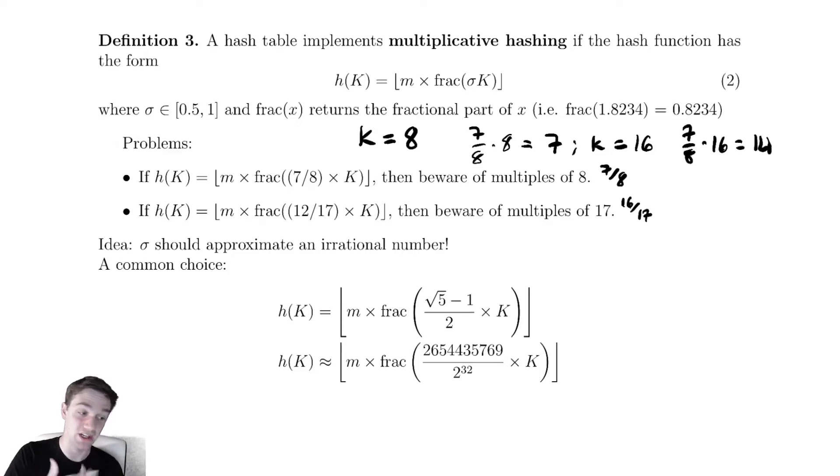So one way around this is that you can make this approximate an irrational number. Irrational numbers are numbers which cannot be expressed as an integer divided by an integer. And that should therefore avoid this particular issue. One common choice is this thing that looks vaguely similar to something you may have seen with the golden ratio. This is radical 5 minus 1 over 2. An approximation of this value is this horrible looking fraction here.